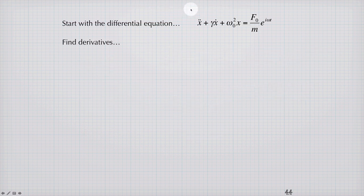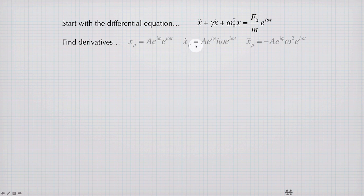Let's return now to our differential equation and see if we can solve it. The solution we're trying was x of p, A e to the i phi e to the i omega t. We'll take this function for x, and its first and second derivatives, and in the same way as we did for the homogeneous equation, we'll substitute them into this equation, and then see if we can find parameters that allow this to be a solution.